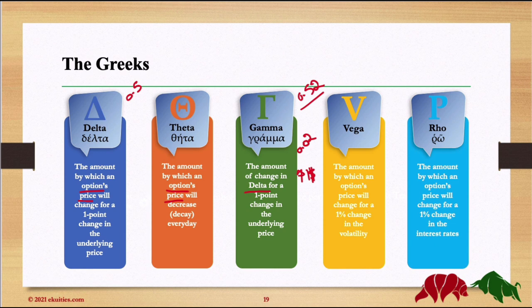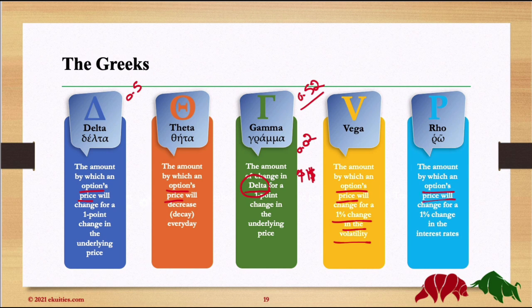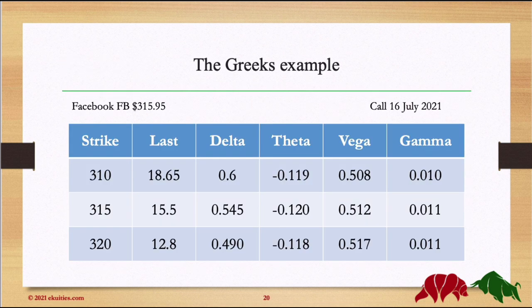Vega is the change in options price for a one-unit change in volatility — if volatility goes up, the amount of Vega represents how much the option price changes. Finally, Rho is the change in option price for a 1% change in the interest rate. I wouldn't worry too much about Rho given the current low interest rate environment.